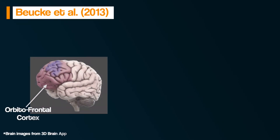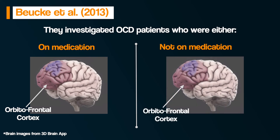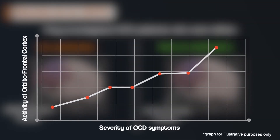Evidence for the role of this worry circuit, and specifically the orbitofrontal cortex in OCD, comes from Buick et al. in 2013. They looked at OCD patients who were on medication and OCD patients not on medication. They found that non-medicated OCD patients showed greater activity and connectivity in the orbitofrontal cortex. The level of activity in the orbitofrontal cortex was also positively correlated with how severe their OCD symptoms were — in other words, the more severe the OCD symptoms, the more active the orbitofrontal cortex.